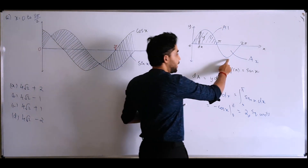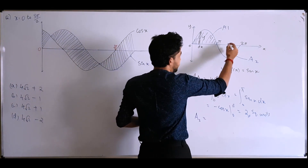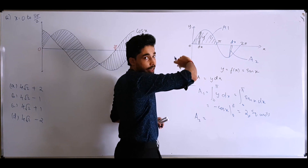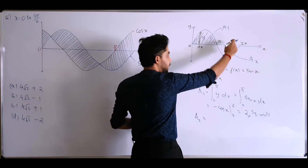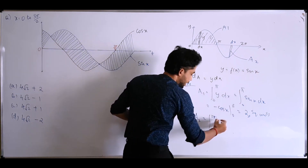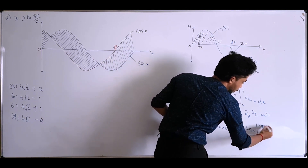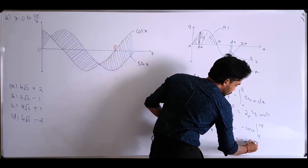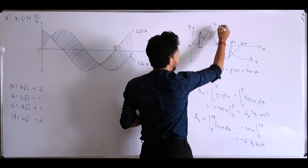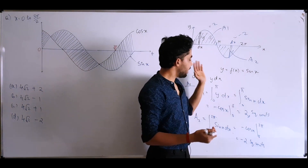Now for area A2, I divide it into a strip of width dx and length y. To find the entire area, I integrate sin x dx from π to 2π. Integration of sin x is −cos x, and applying the limits π and 2π gives the value as −2 square units.